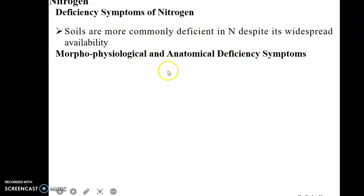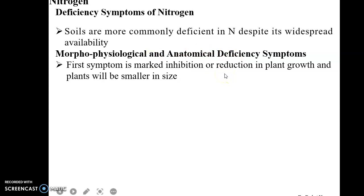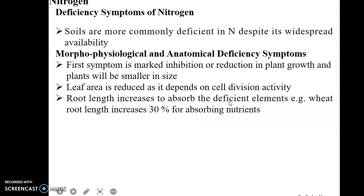Morpho-physiological and anatomical deficiency symptoms of nitrogen include: First, marked inhibition or reduction in plant growth—stunted growth will be observed. Leaf area is reduced as it depends on cell division activity. Root length increases to absorb the deficient element. For example, wheat root length increases 30% for absorbing nutrients in the absence of nitrogen.